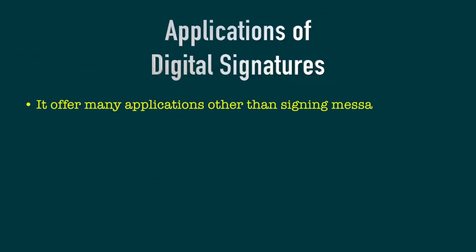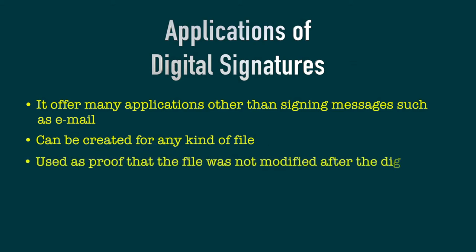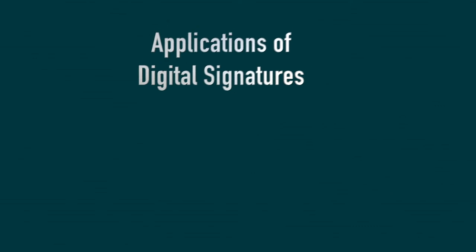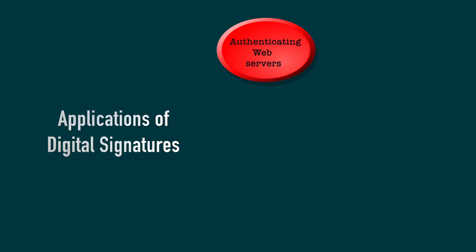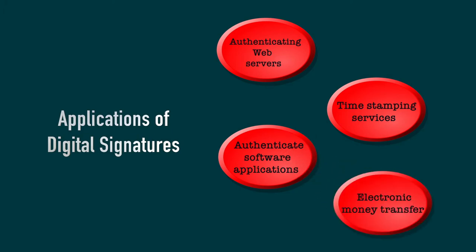Digital signatures offer many applications other than signing messages such as email. A digital signature can be created for any kind of file. The digital signature can be used as proof that the file was not modified after the signature was created. It can also be used to make the file unique, for example by appending a serial number to the file and signing the result. Other applications of digital signatures include authenticating web servers, time stamping services, authenticating software applications, and electronic money transfers.